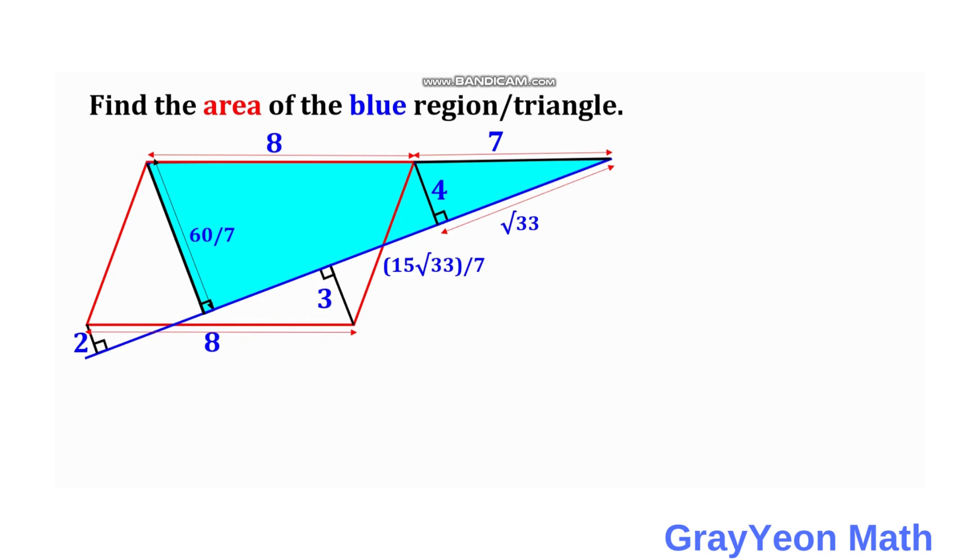Okay, so now for the final step, we are now ready to find the area of the blue region. So area is simply equal to one half times the base, which is 15 square root of 33 over 7, times the height, which is 60 over 7.